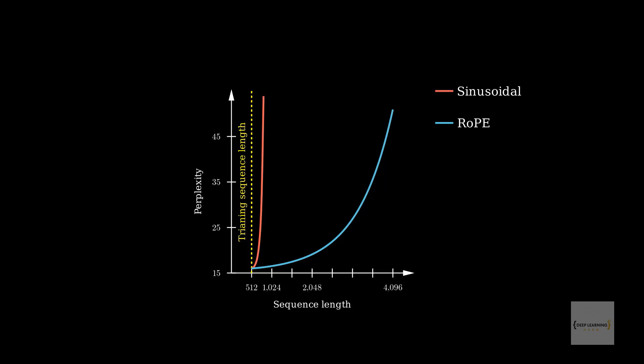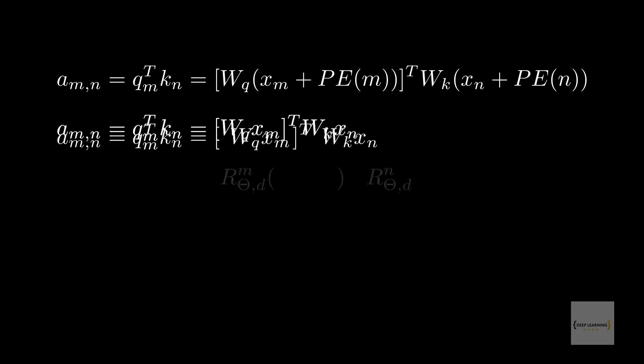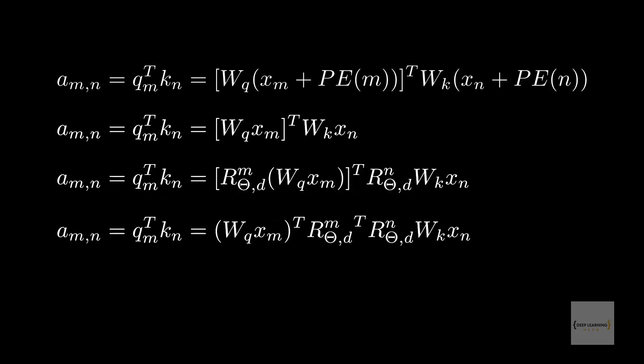Let's also look at how the equations are changing from sinusoidal positional embeddings to rope embeddings. First, we're going to ditch the positional embeddings, which leaves us with WQXM transpose dot WKXN. Then we're going to introduce R theta, one for Q and one for K. Then we're going to arrange this in a way that the R thetas are close together. And finally, we arrive at the equation that is in the paper.